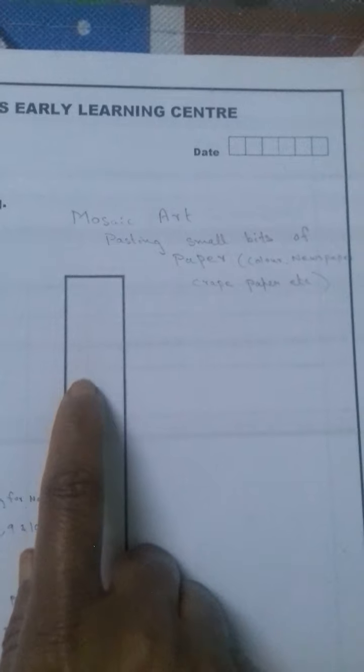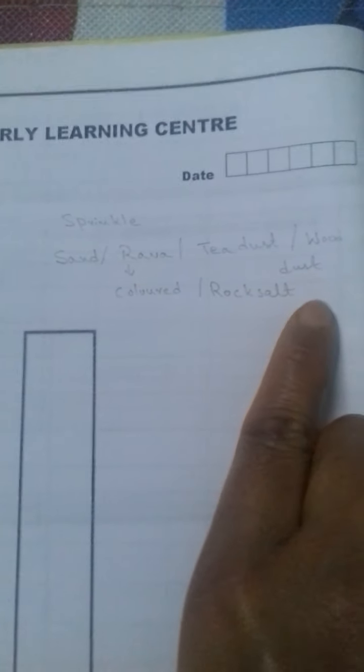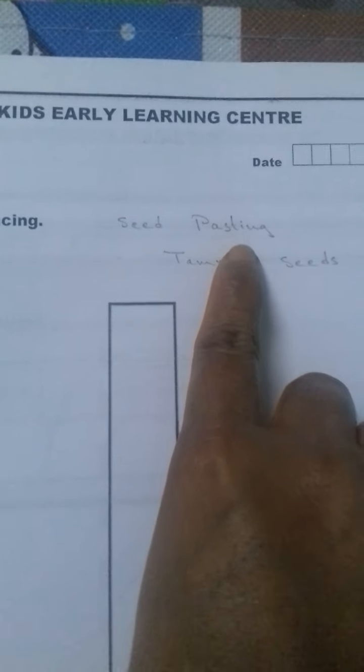Then in the next activity you can give sprinkling activities—that is you can give sand, colored rava, tea dust, wood dust, or rock salt. For colored rava you can do a DIY activity at home; you can color the ravas using food color.